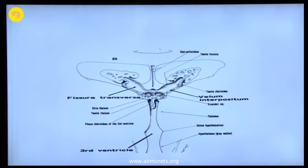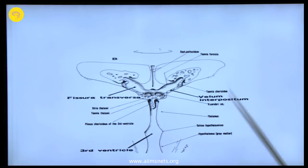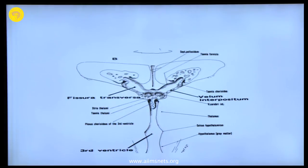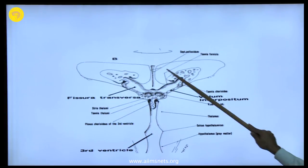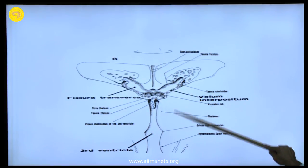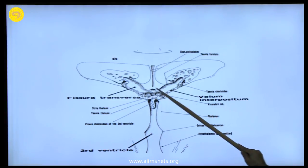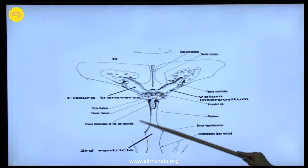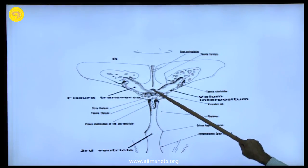Most of the time we enter the third ventricle through the foramen of Monroe — you enter one or other lateral ventricle and then enter through the foramen of Monroe, because most of the time we are entering in a pathological situation where it is already enlarged. Ideally, if there is no distortion, the ideal approach for entering the third ventricle would be through the sub-choroidal route. Remaining strictly in the midline, going sub-choroidal and entering the roof of the third ventricle.